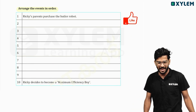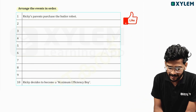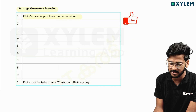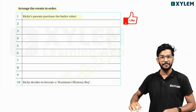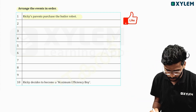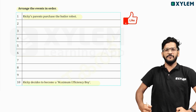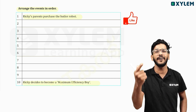Here is one example: Ricky's parents purchased the butler robot. He purchased the butler robot. Soon, Ricky decided to become a maximum efficient boy.